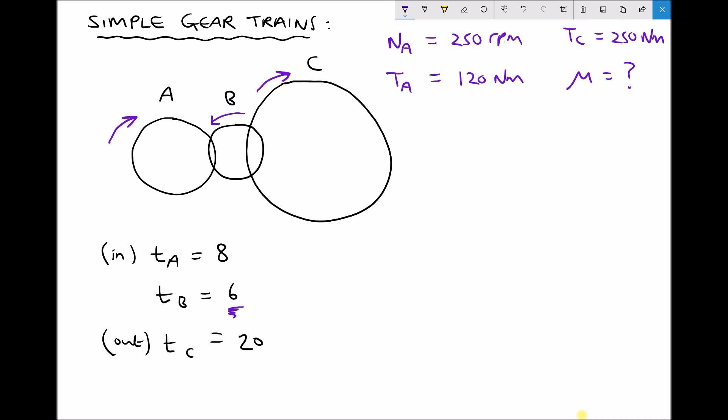Now we've got various different information for this question. We've got the number of teeth on A and the number of teeth on C which we need to calculate our gear ratio. We've got the input speed and the input torque, and we've also got the output torque. So in this example we've measured the output torque and what we're going to calculate is the efficiency of our gearbox.